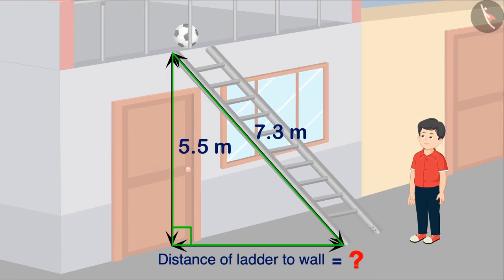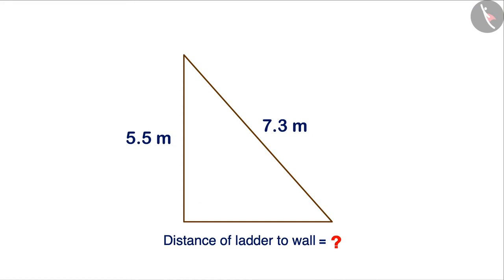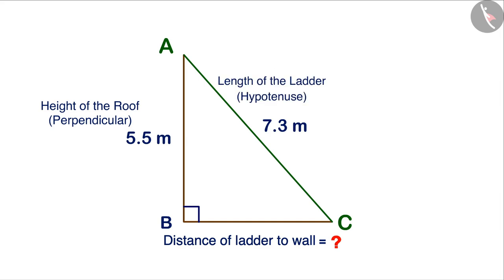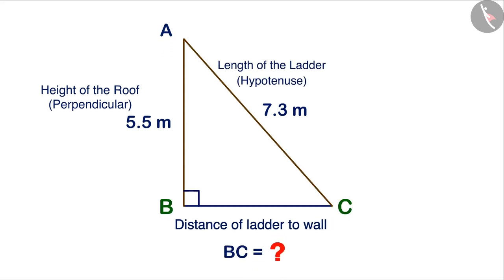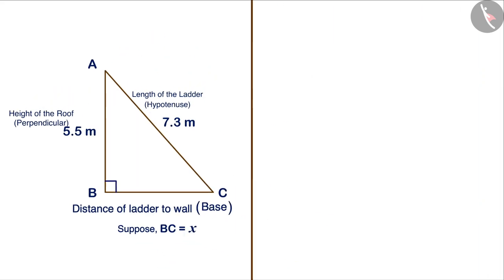If we look at the figure carefully, we will see that a right triangle is being formed here. Let's name it triangle ABC. Here, AB is the height of the roof. Angle B is the right angle and AC is the hypotenuse of this triangle. Here, we have to find the length of BC, which is the base of this triangle. Suppose its value is x. How do we find the value of x?